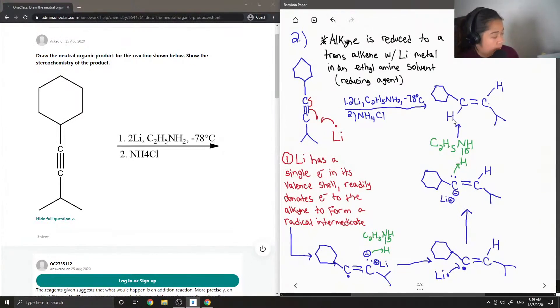And then notice that our structure is in the trans position. So meaning the two substituents, that cyclohexane and that isopropyl group, are on opposite sides.